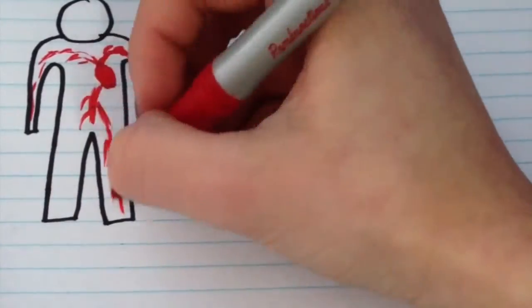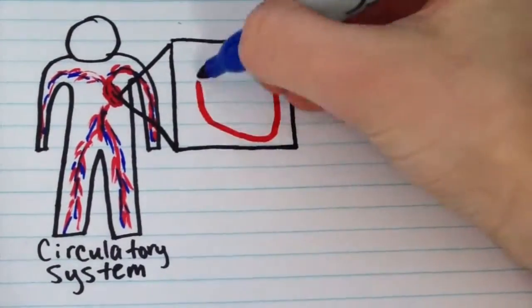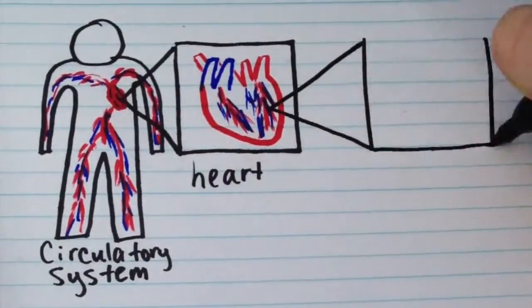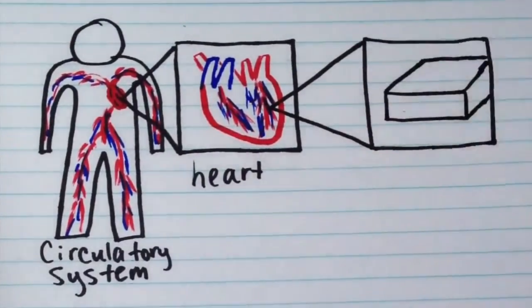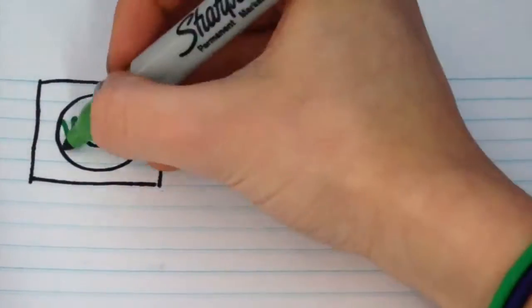Scientists have found that our entire body is made up of many systems. Each system is made up of a few organs. Organs are made up of tissues. Tissues are composed of cells. Cells are made of organelles.